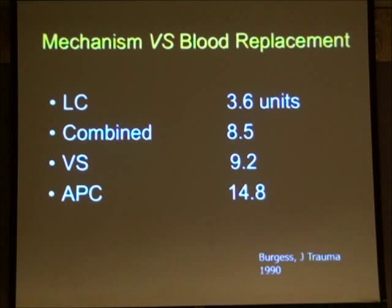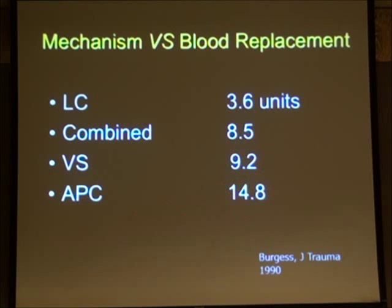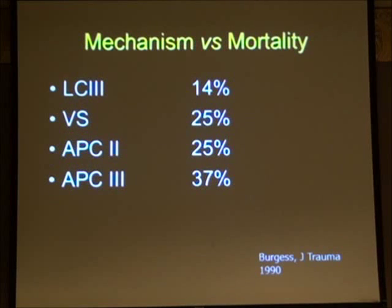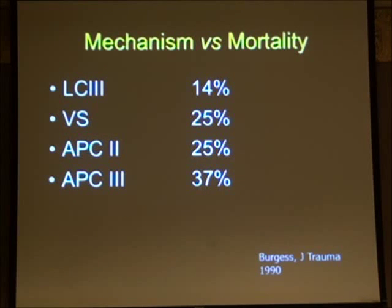This classification is helpful because looking at these figures, APC and vertical shear fractures cause significant blood loss and need massive transfusions. Looking at mortality across fracture types, APC3, APC2, and vertical shear all have higher mortality. So we are able to predict transfusion requirements and possible mortality in these patients.